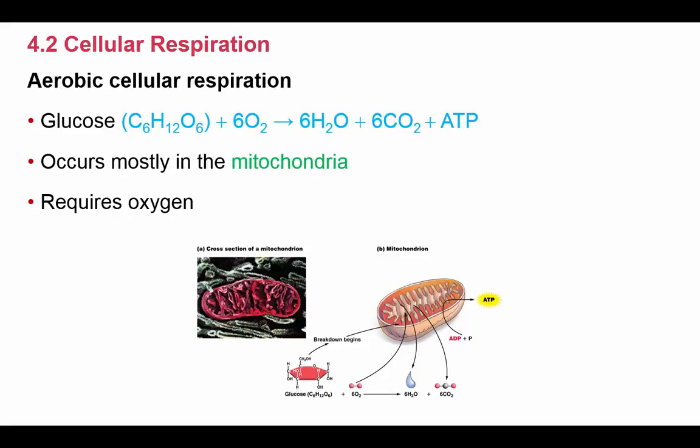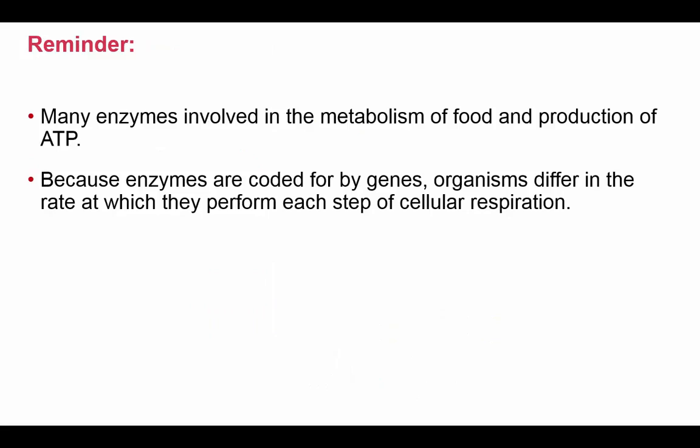Cellular respiration mostly occurs in the mitochondria of a cell — known as the powerhouse because it generates the most ATP. This is aerobic cellular respiration, so it requires oxygen to complete the process. Enzymes are involved in speeding up these reactions and producing ATP. Since enzymes are coded for by genes, not only is metabolic rate affected by genetics, but so is the rate of cellular respiration.